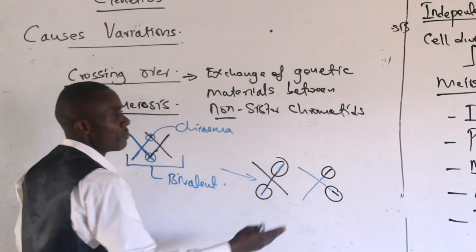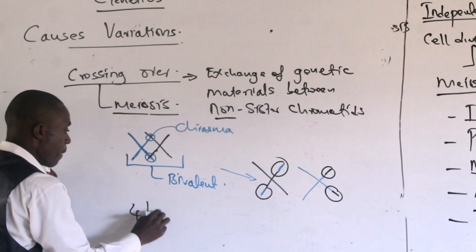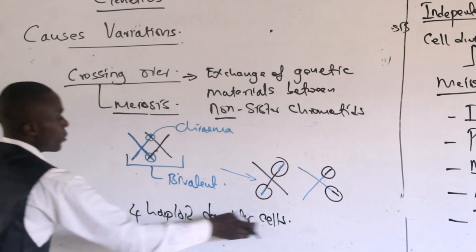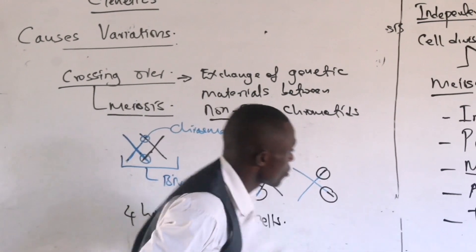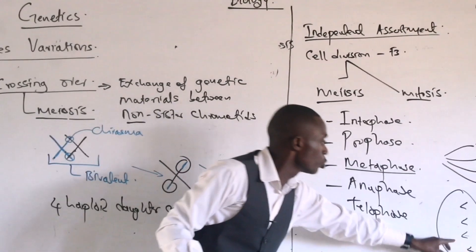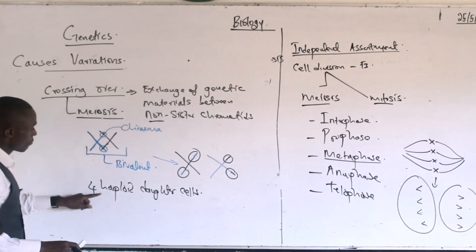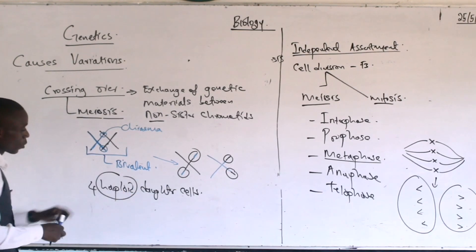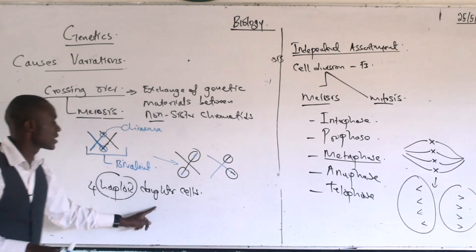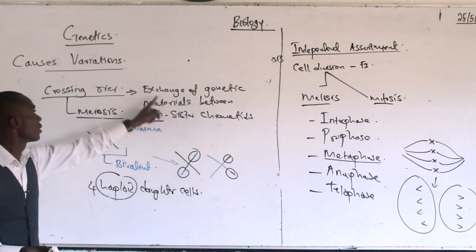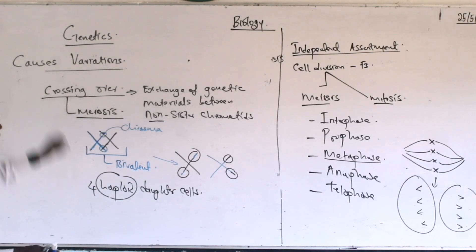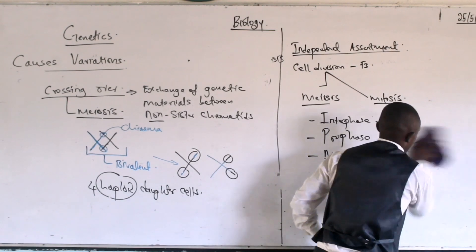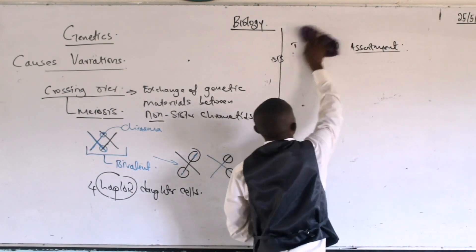In meiosis, the result is four haploid daughter cells. Each of the four haploid daughter cells has half the number of chromosomes compared to the parent cell, and each has a different genetic constitution because of the phenomenon of crossing over.